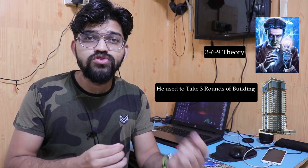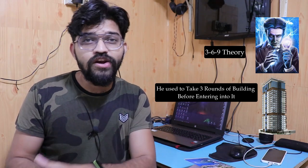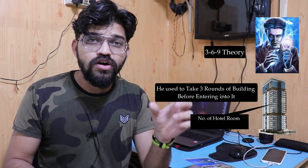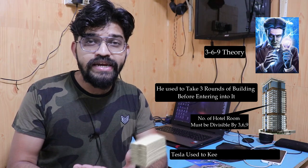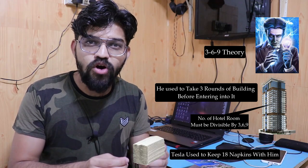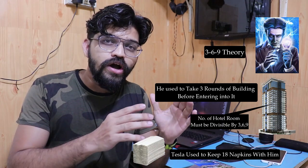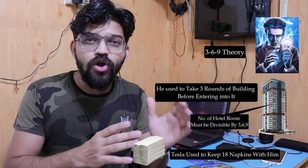There is a hidden code embedded in our universe — our universe follows a strange pattern, and that is nothing but the 369 code. Nikola Tesla also followed this pattern throughout his life. While entering a building, he used to take three rounds of it. He lived in hotel rooms whose numbers were divisible by 3, 6, or 9. He kept 18 napkins with him and calculated the exact amount of food he consumed to obey the law of 369.